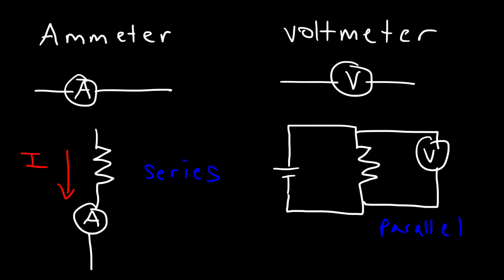When designing an ammeter, you want the internal resistance to be very close to zero, because you don't want the ammeter to affect the current flowing in the circuit. In the case of a voltmeter, you want the internal resistance to be very high — very close to infinity — so that the voltmeter doesn't decrease the voltage across the resistor to any significant extent.